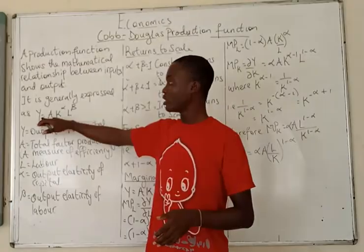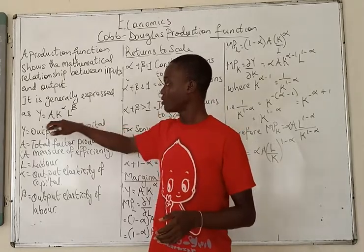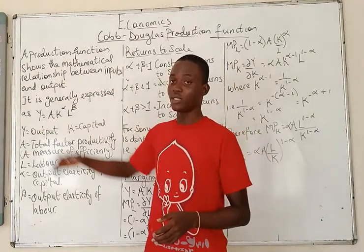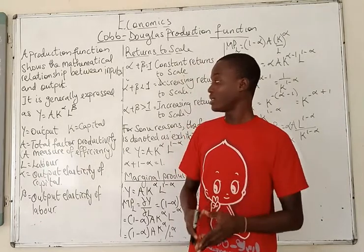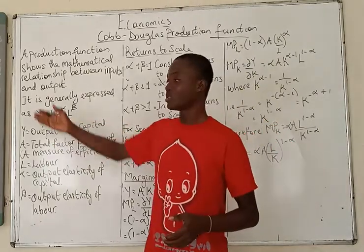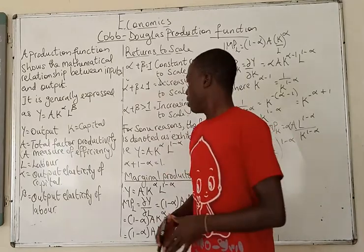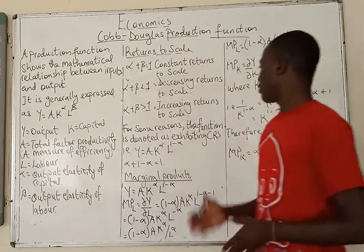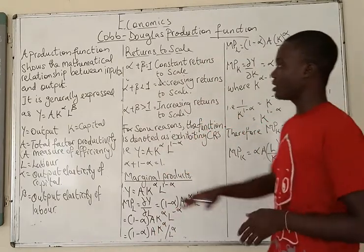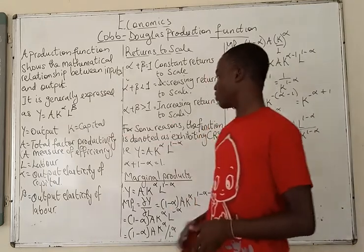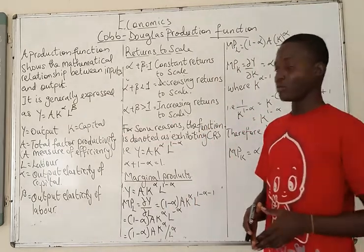An increase in A will increase Y, an increase in capital will increase Y, an increase in labor will also increase Y, and vice versa — a decrease in each of them will also decrease output. For some reasons, the Cobb-Douglas production function is often written as exhibiting constant returns to scale.